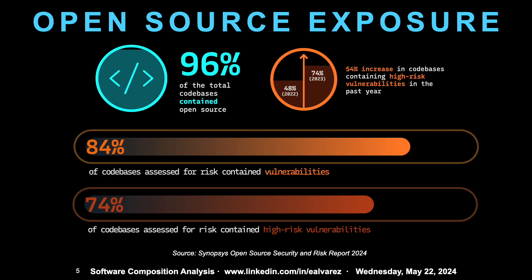We take a look here at the open source exposure. This is from the Synopsys Open Source Security and Risk Report from 2024. Of the code bases analyzed, 96% contained open source. Troubling from the previous year is the 54% increase in high-risk vulnerabilities that were found. 84% of the code bases contain vulnerabilities, and 74% of these contain high-risk vulnerabilities.